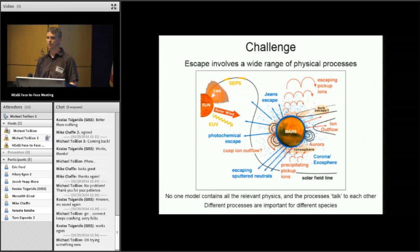And it turns out no one model can contain all of the relevant physics, at least today. Even coupled models fail to contain all of the relevant physics to capture all of these different escape processes that can be happening on Venus, Earth, or Mars. Not only that, the processes talk to each other. There's feedback between the processes. So modeling while excluding some of the processes may lead you to a wrong answer, and may not. We just don't know right now. And as I said before, different processes are important for different species.